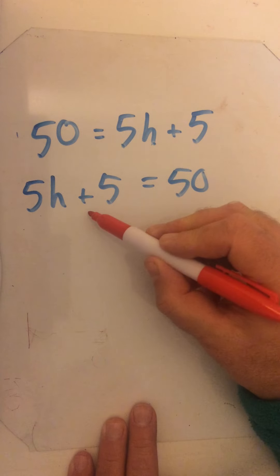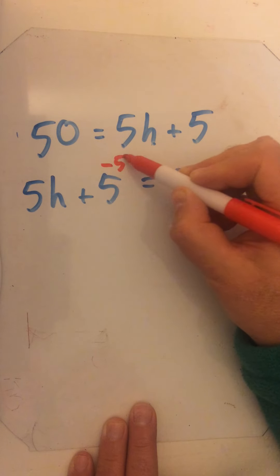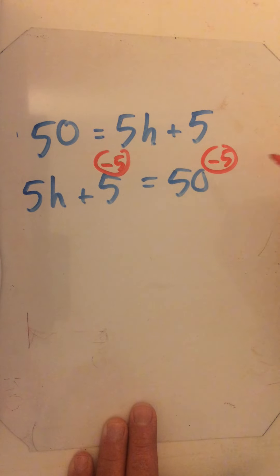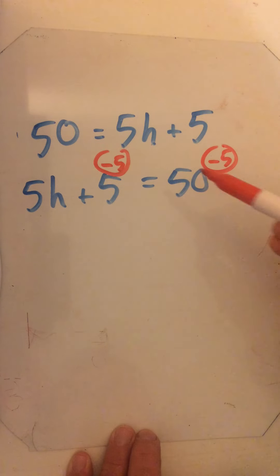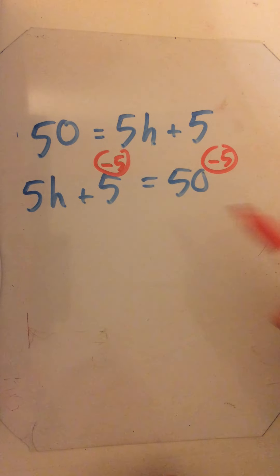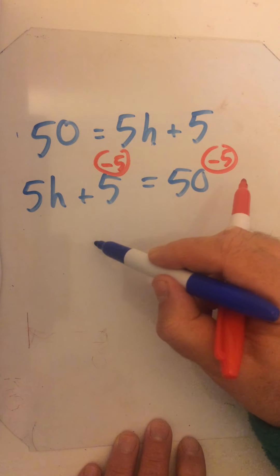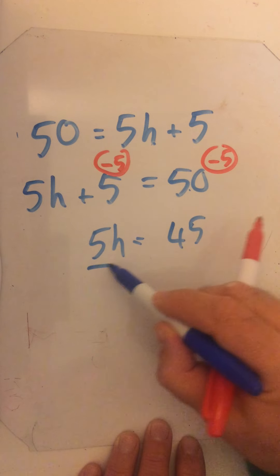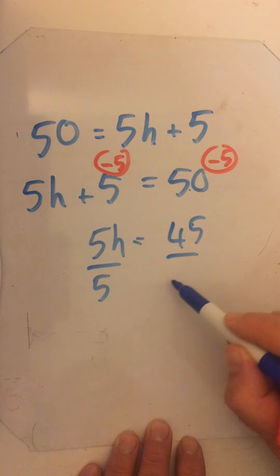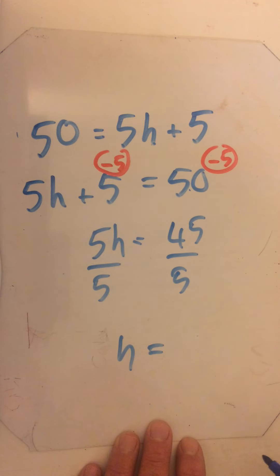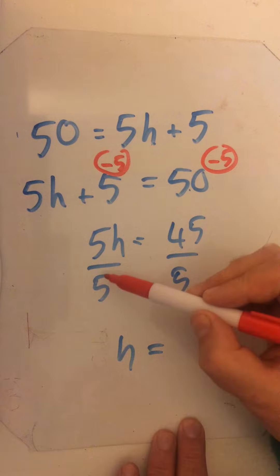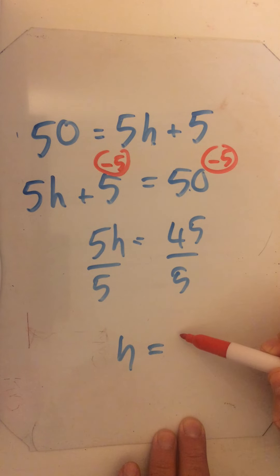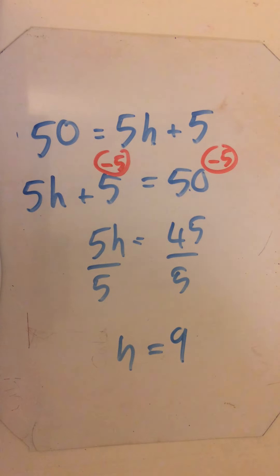The letter is on the other side of the equal sign this time. I can still work it out from that side, but personally I think it's easier — especially when we're first doing these — to just swap them over. That is exactly the same equation. So: 5h plus 5 equals 50. I'm going to take 5 away — do the same on the other side. Positive 5 minus 5 leaves nothing, so I've got 5h. 50 take away 5 is 45. Divide by 5 to give me h — that leaves me with 9. h equals 9.